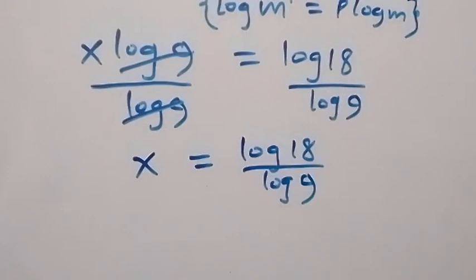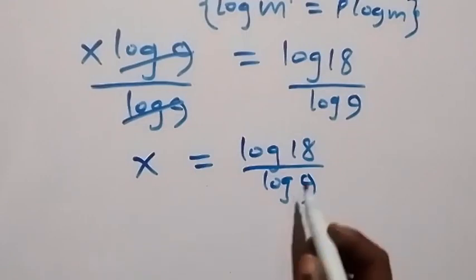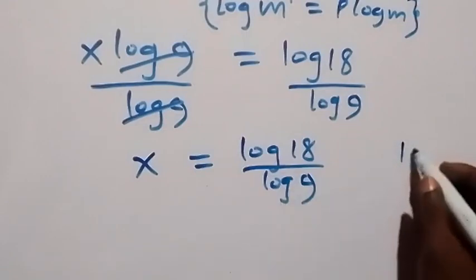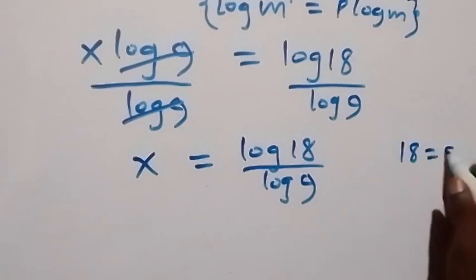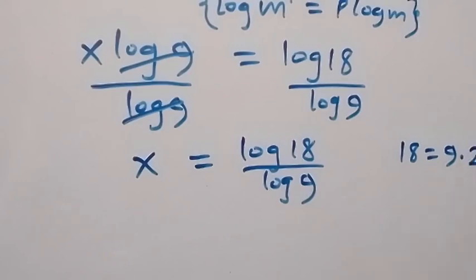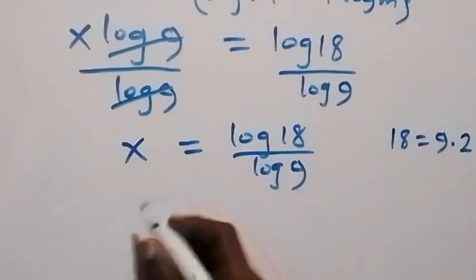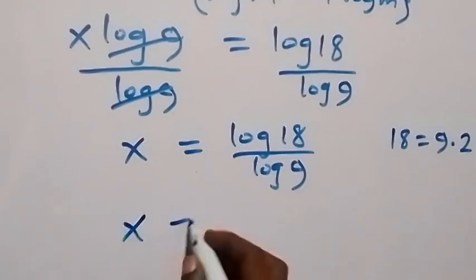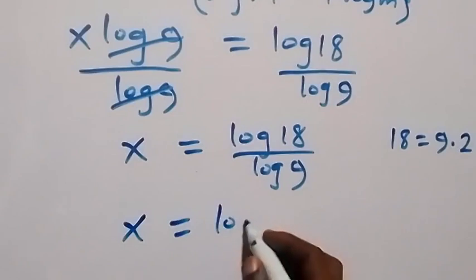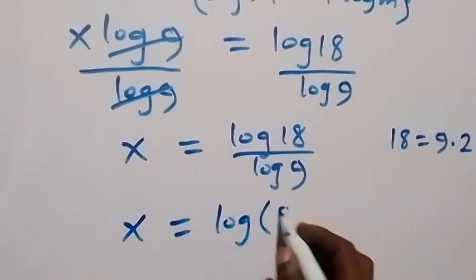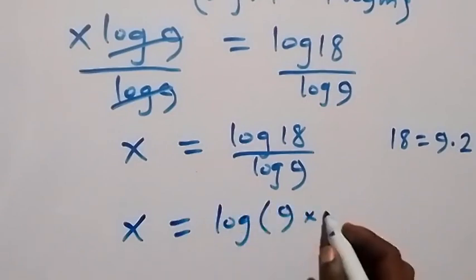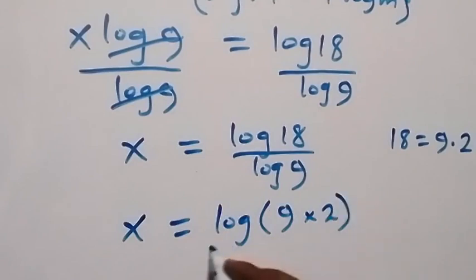We can simplify further and write 18 as 9 multiplied by 2. Then we have x equals log of 9 times 2, divided by log 9.